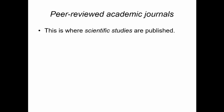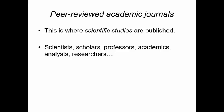Peer-reviewed academic journals are very important to the process of adding knowledge to all fields. This is where the scientific studies are published. There are dozens of these journals just in the political and social science realm. This is where the scientists, scholars, professors, and academics publish their work.